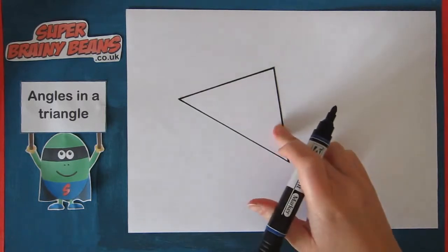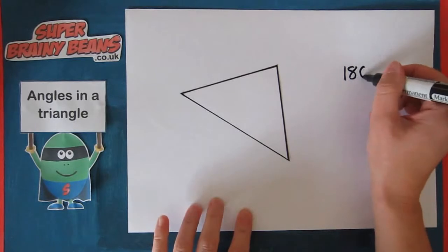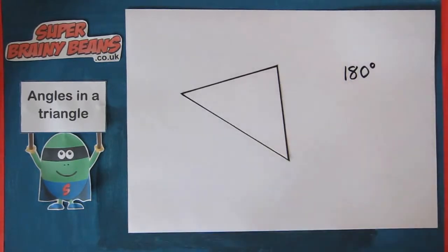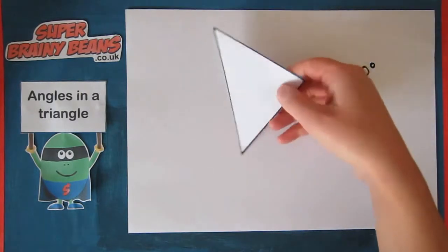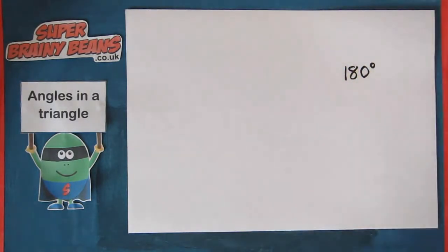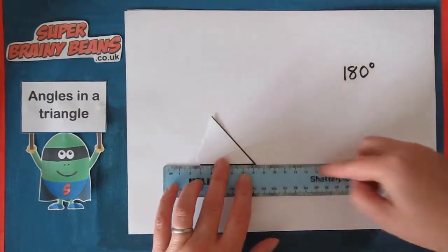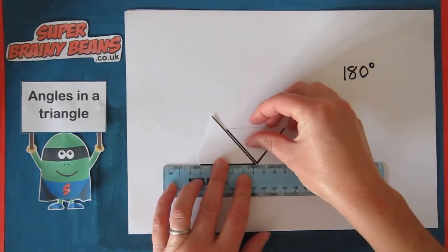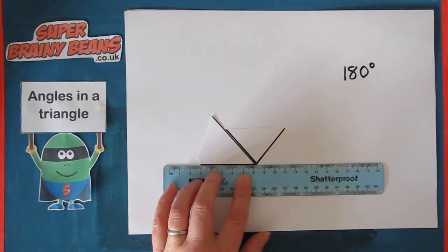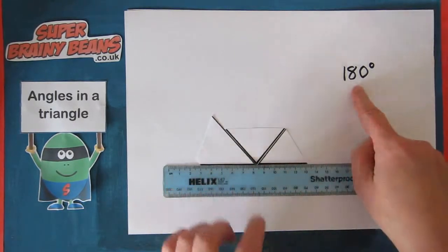The angles in a triangle all add up to 180 degrees. I can show you this by cutting up this triangle. When we put the corners of the triangles against a ruler, a straight line, we can see they all fit together to make 180 degrees.